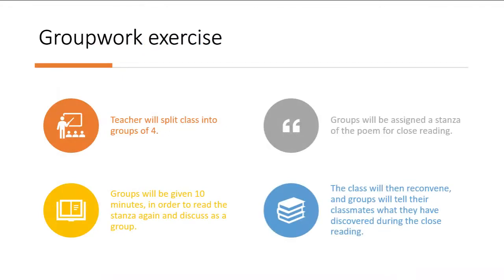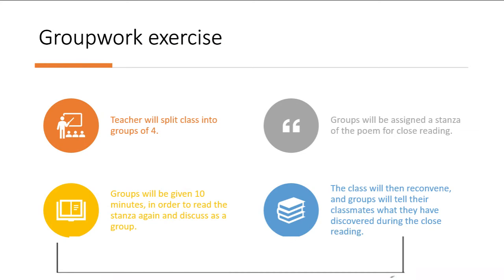The teacher will then initiate a group work exercise. In order to analyse the meaning of the poem, the teacher will split the class into groups of four. Each group will be assigned a stanza of the poem for a close reading. The class will be given 10 minutes to read their stanza and discuss its meaning as a group, before sharing their findings with the class — acting as de facto experts on their assigned stanza.